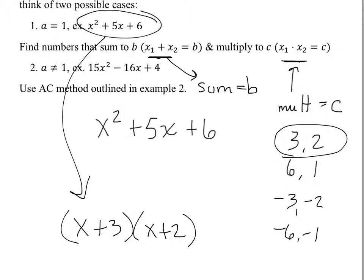Whenever A is equal to one, like in this case, find two numbers that multiply to give you C. You have many choices, then figure out which one of those choices adds up to give you B. It's the exact same process every time for Case 1. For Case 2, the AC method, I'll talk about in a minute. Let's do more examples of Case 1 first to make sure we get it.